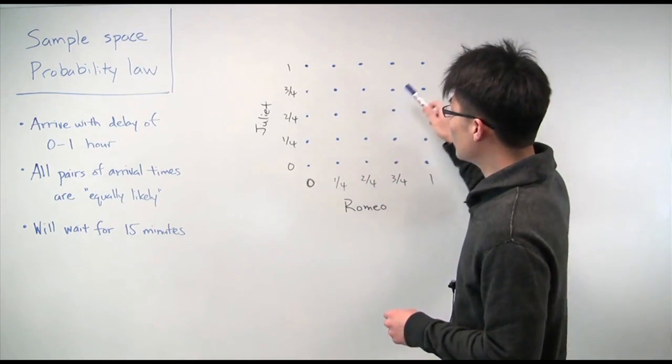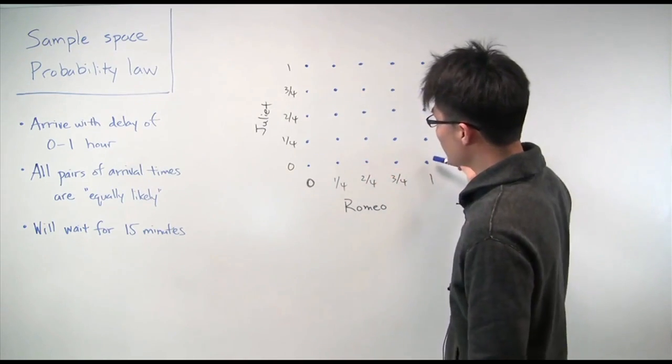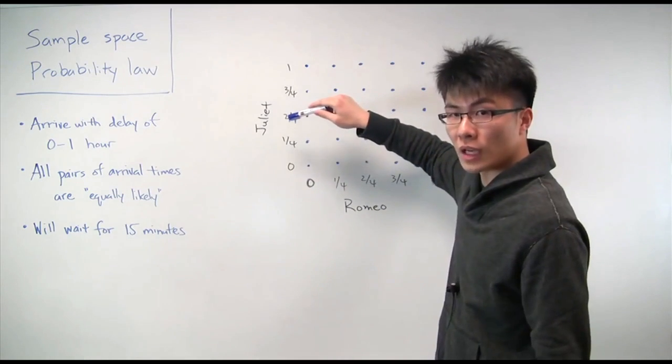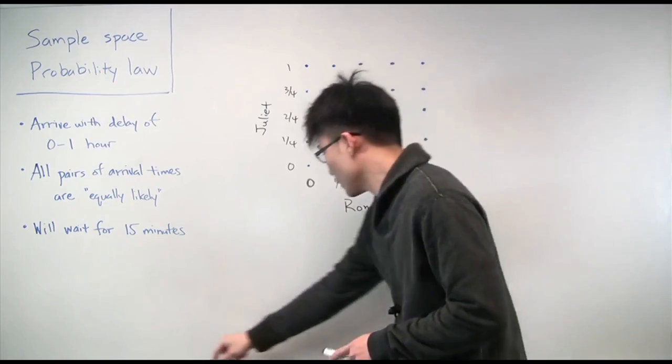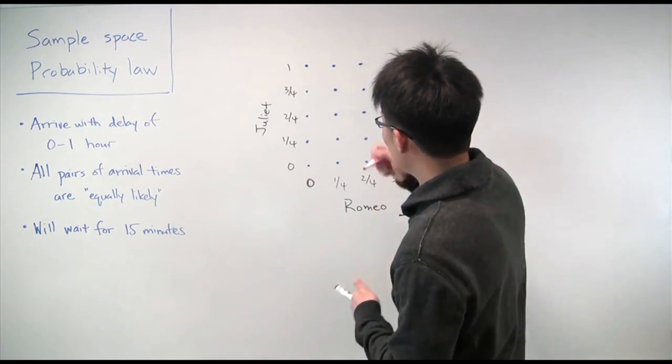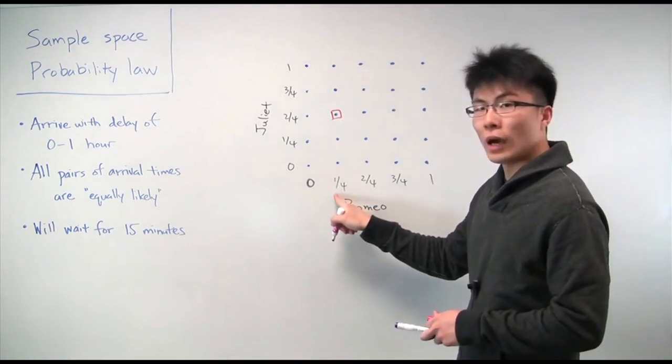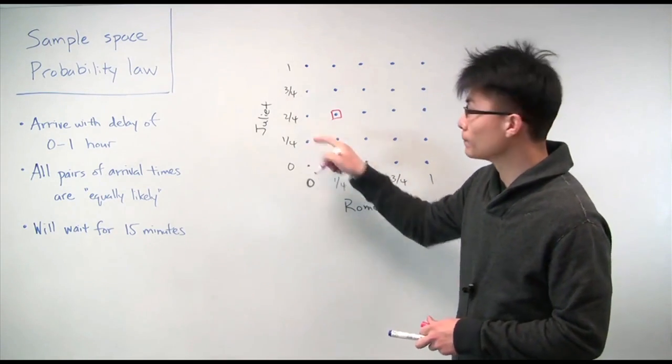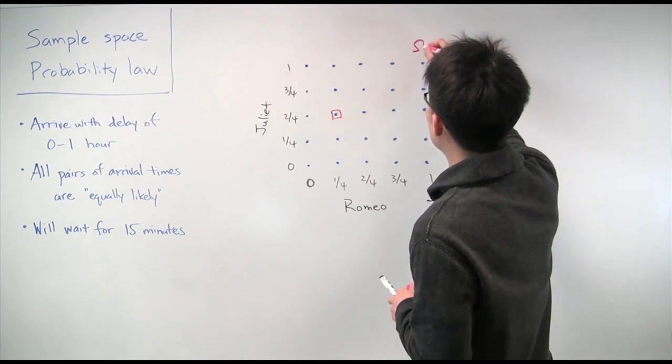to group this sample space into a grid. The horizontal axis here represents the arrival time of Romeo, and the vertical axis represents the arrival time of Juliet. So for example, this point here would represent Romeo arriving 15 minutes late and Juliet arriving 30 minutes late. So this is our sample space now, this is our omega.